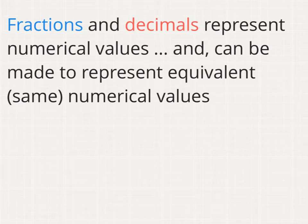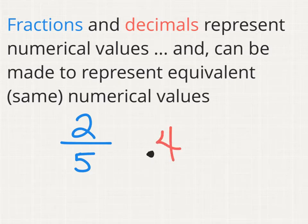Fractions and decimals represent numerical values, and they can be made to represent equivalent or the same numerical values. For example, I might have the fraction two-fifths. Two-fifths is a fractional representation of a numerical value. I can take that fraction and represent it in the form of a decimal that has an equivalent value. I know that the decimal 0.4 has exactly the same value as the fraction two-fifths.